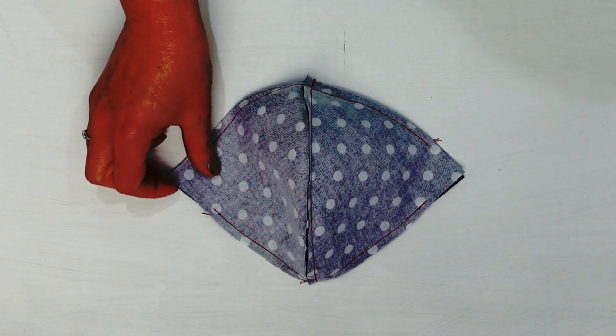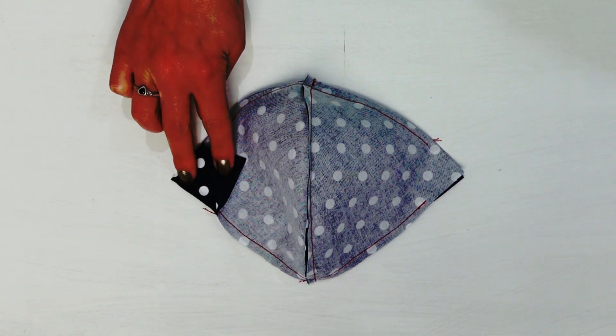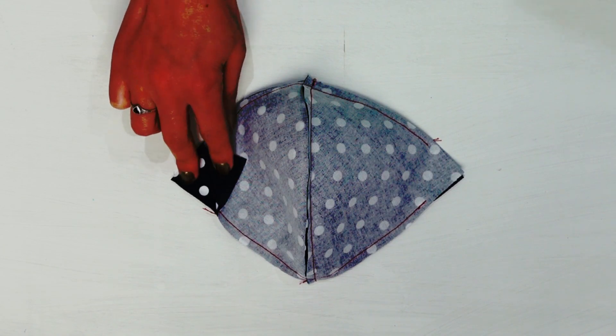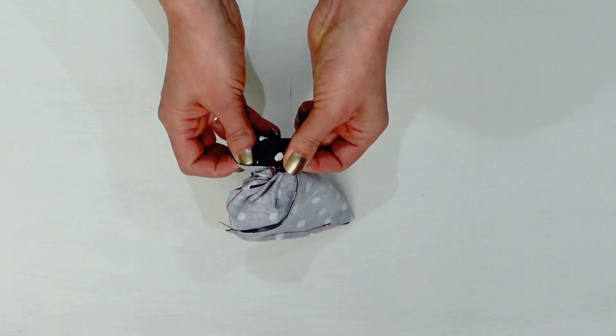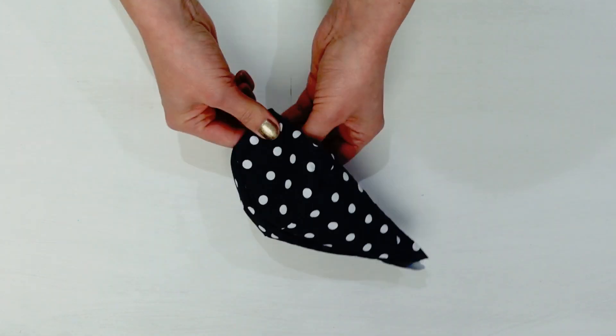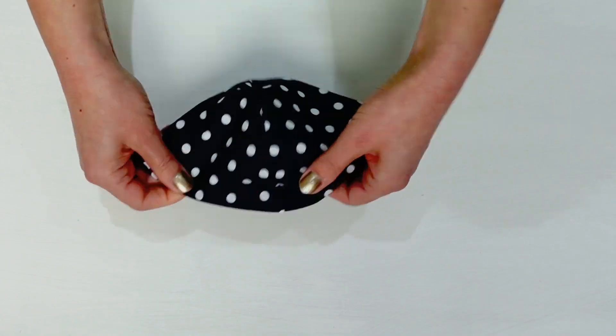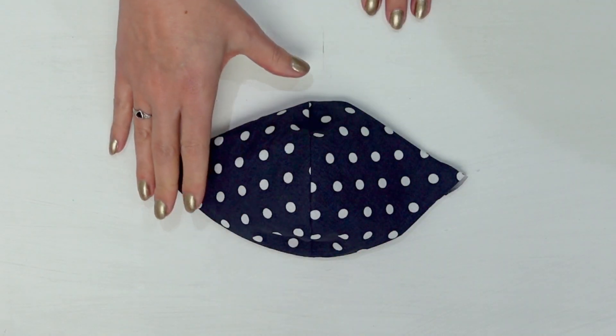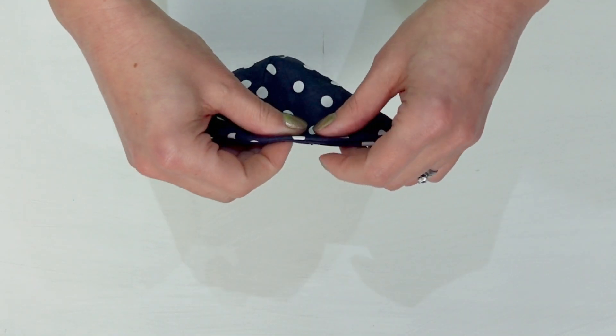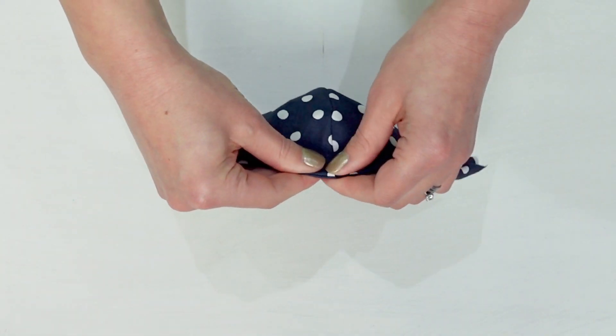Turn your mask through to the right side using one of the holes that we left at each end. At this stage you may want to press your mask with your iron or you could just give it a light finger press.